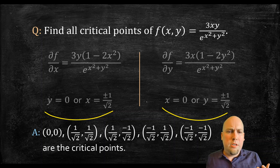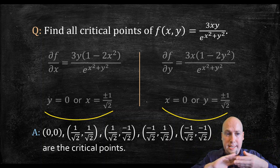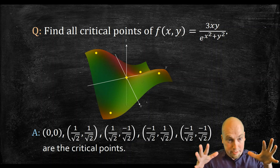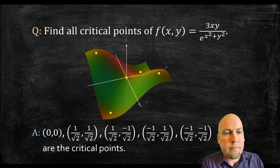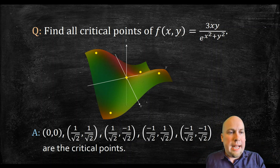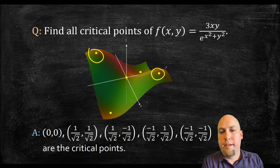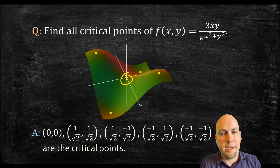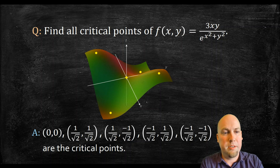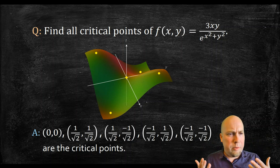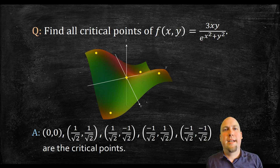Once we've found the critical points, the follow-up question is: what types are they — maxes, mins, or saddle points? We don't have the tools to answer that yet. But we can graph the function and plot where the critical points are. It looks like we've got two maxes, two mins down at the bottoms of valleys, and a saddle point in the middle at (0, 0) — because going in one direction you increase away from (0, 0) and in another direction you decrease. That's what we're going to prove next lecture.